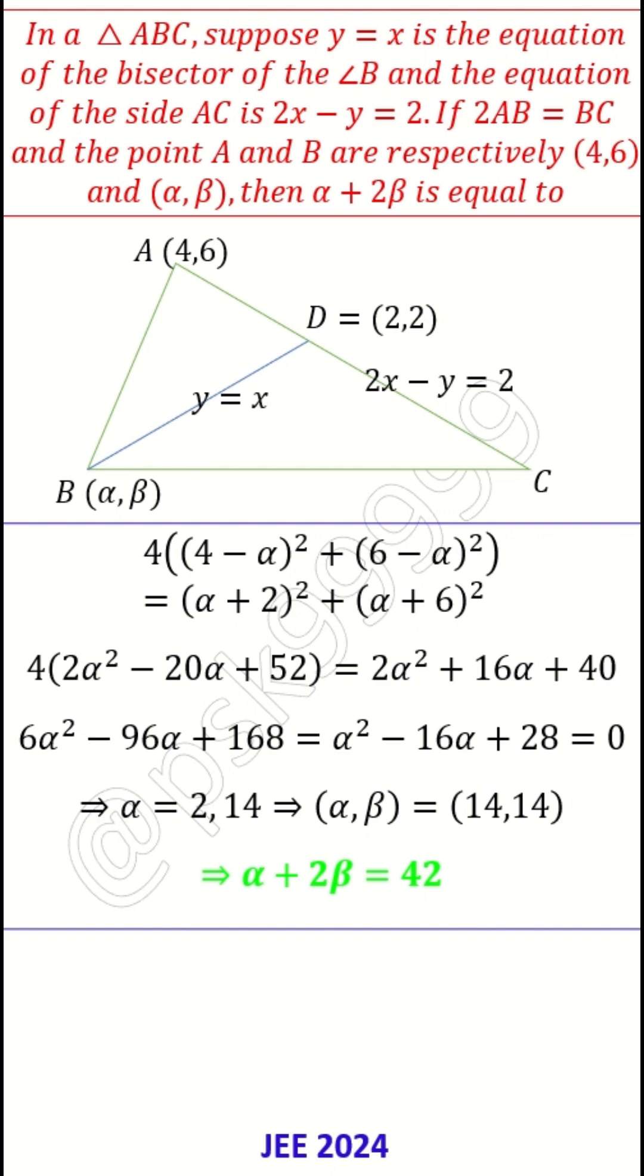α equals 2 or 14. If α is 2, then β is also 2, so (α,β) is (2,2). But (2,2) is D. We already know that D is (2,2), so point B cannot be (2,2). The only option is (α,β) = (14,14). Therefore, α + 2β = 42. That's the answer.